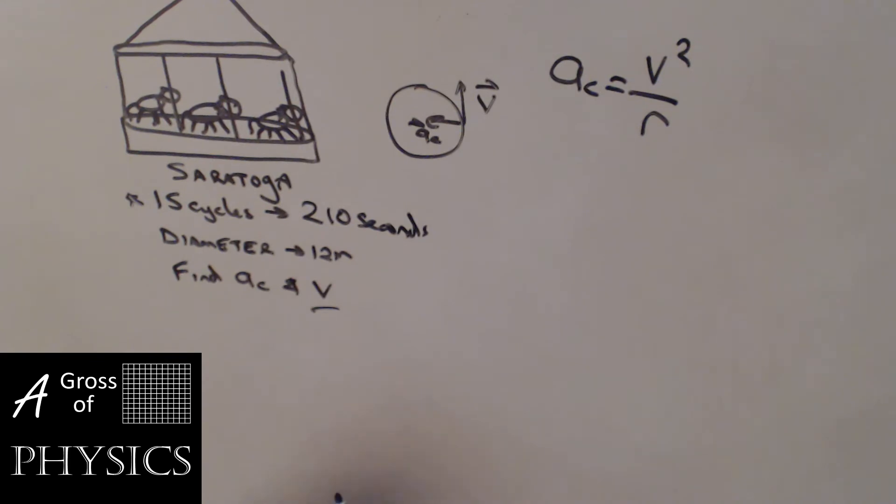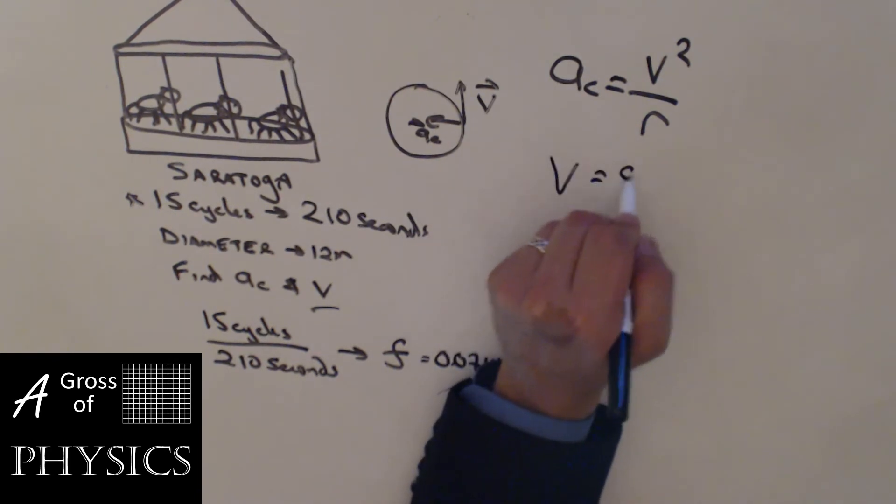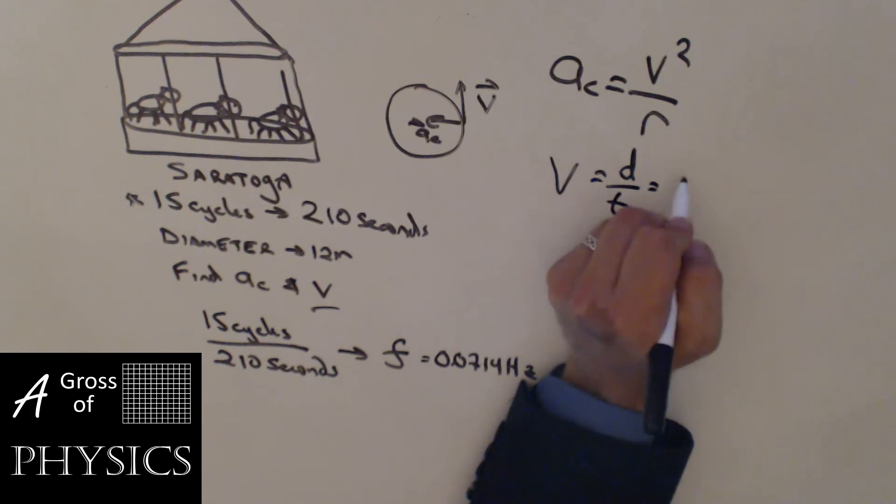Some of you may not believe that's the case, so let's just do 3.5 times 60, which is 210. So that verifies that. Now what we do need is how long it takes to make one oscillation. If we write it like this, 15 cycles over 210 seconds, that's going to give us a frequency and that's a good number: 15 divided by 210 which is 0.0714 hertz. But for our velocity equation we have to remember that it's distance over time. The distance of a circle is 2 pi r and the time of a circle is known as the time period.